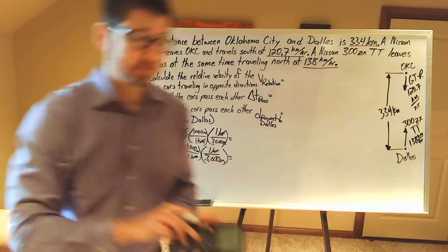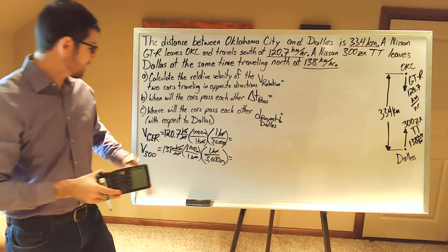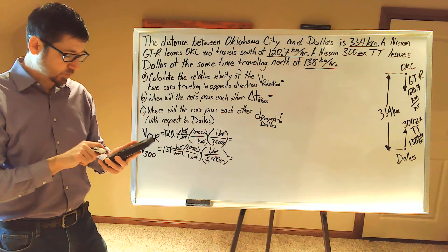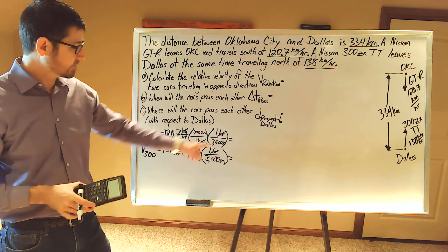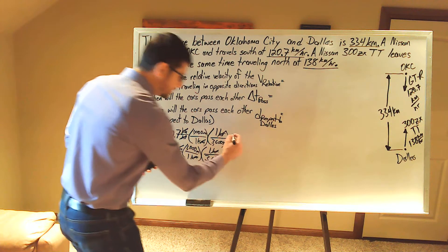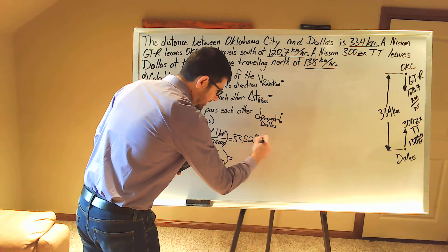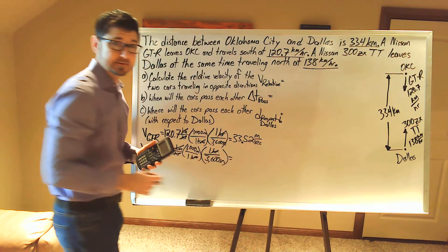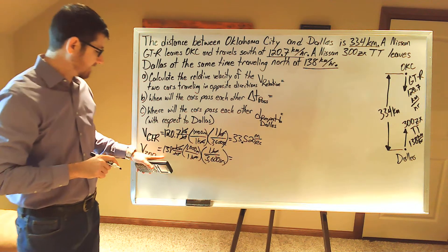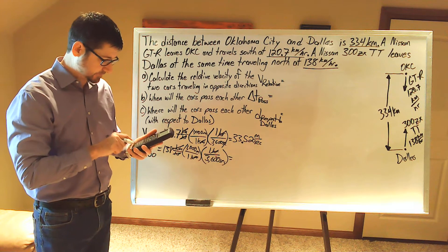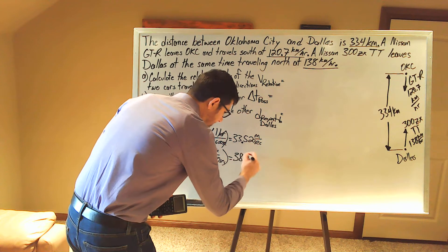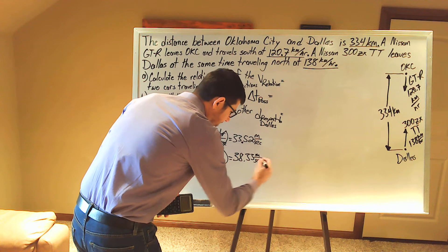Now we calculate our velocities in meters per second. For the GT-R: 120.7 times 1,000 is 120,700, divided by 3,600, which gives us 33.52 meters per second. For the 300ZX Twin Turbo: 138,000 divided by 3,600 gives 38.33 meters per second.